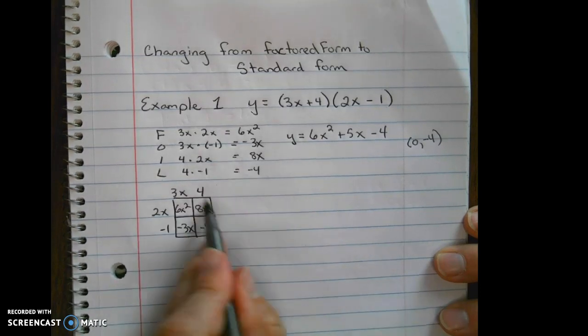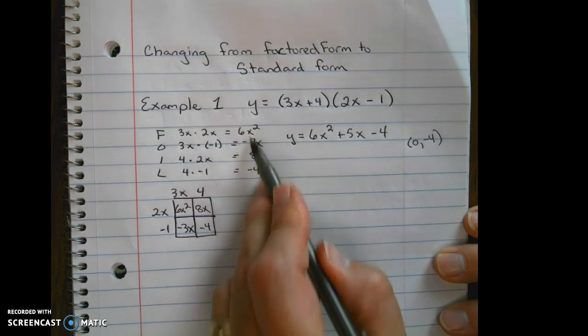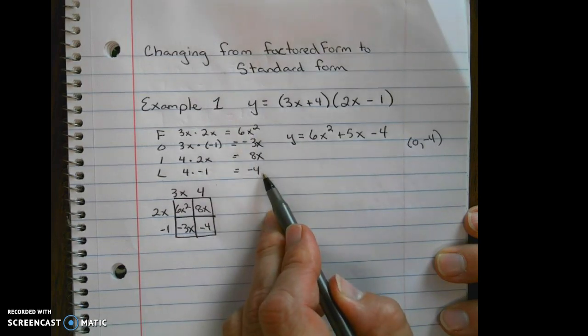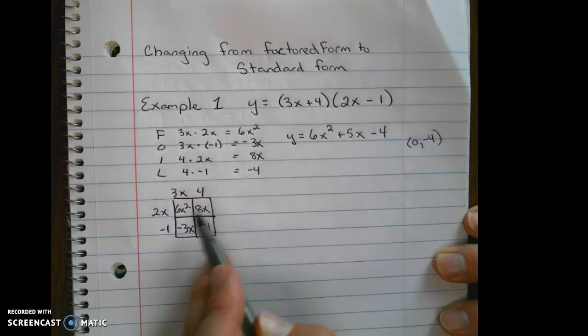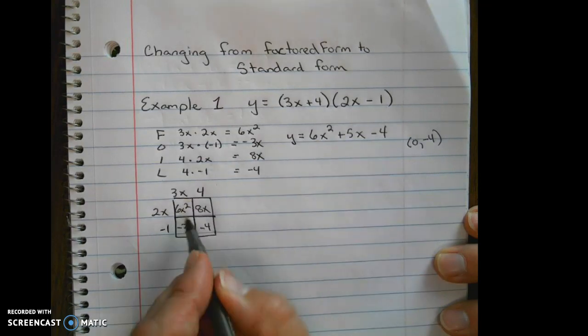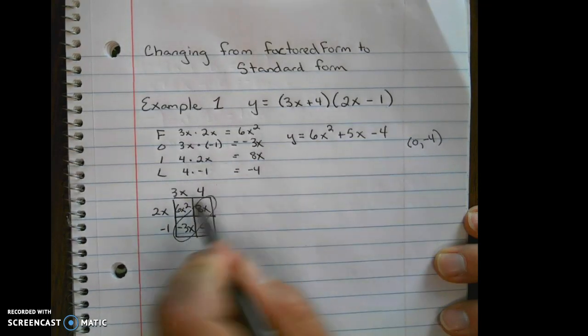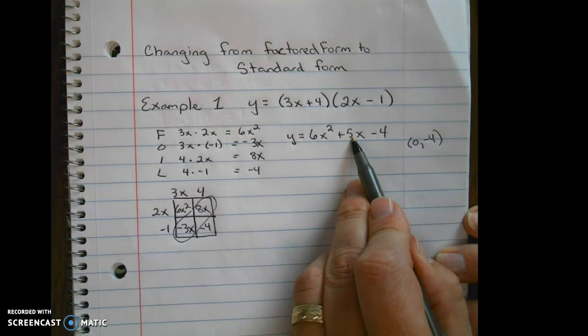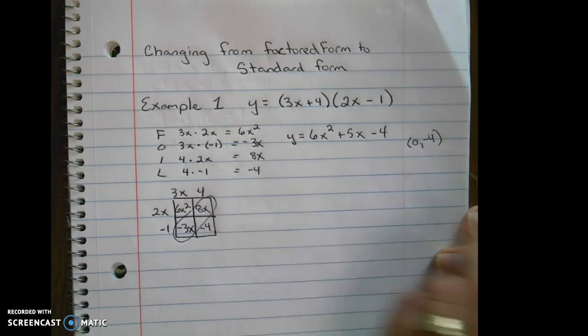As you can see, those terms are the same as we got here. So the first term goes first with the largest exponent. We combine those two to get our second term. And then negative 4, our constant, goes on the end.